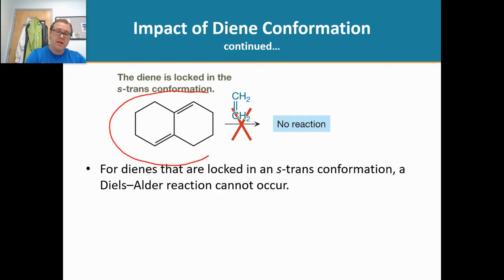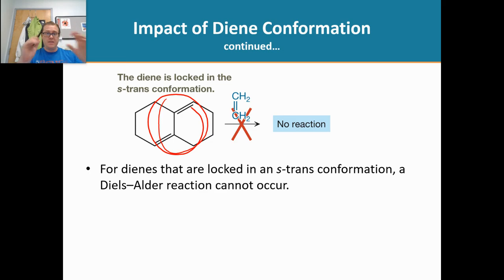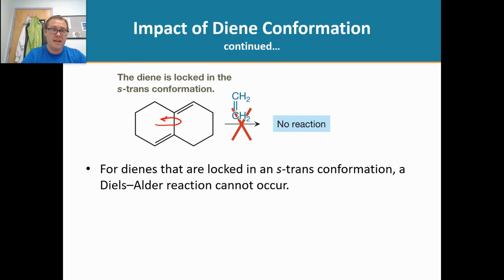This molecule right here is a prime example. What we have here is an S-trans diene, but this will not undergo a Diels-Alder reaction because it is locked in an S-trans conformation. When you have rings together, there is no free rotation around that single bond. It is the rings that prevent bond rotation, so it's locked and it cannot do the Diels-Alder reaction.